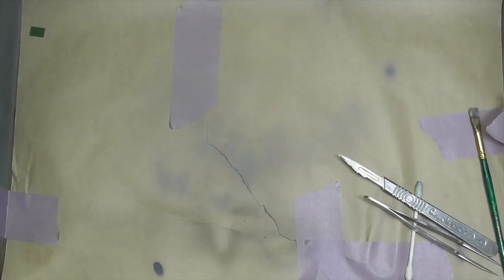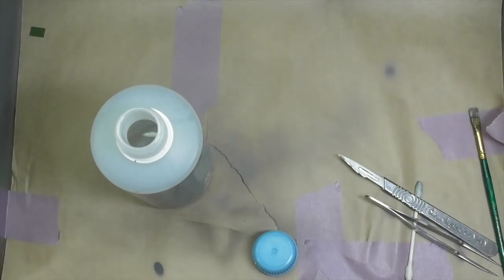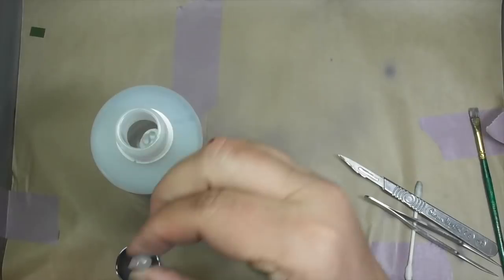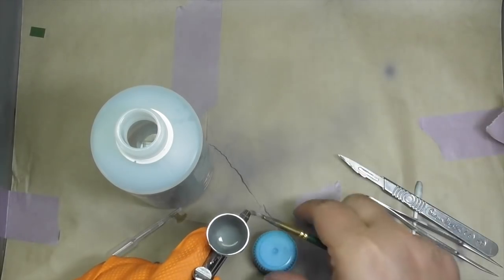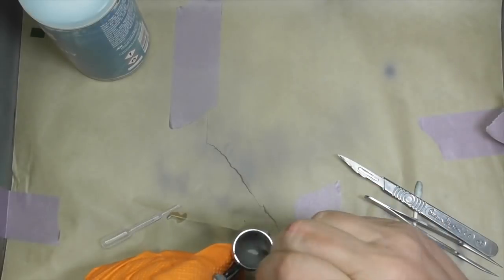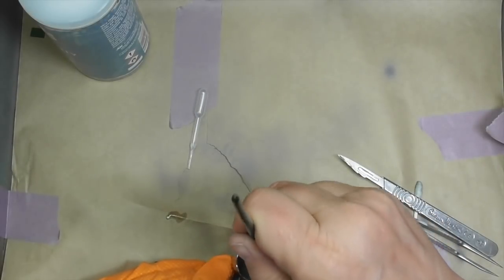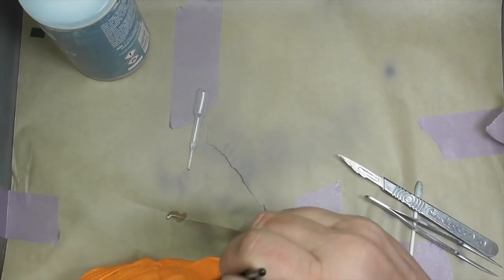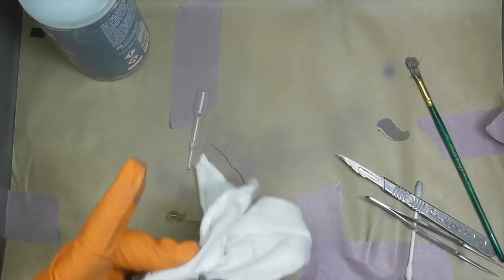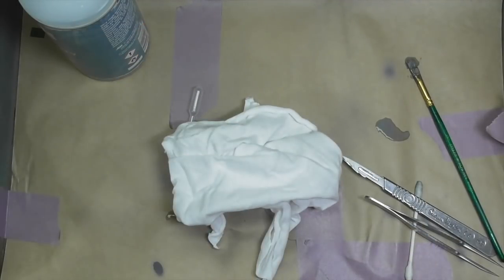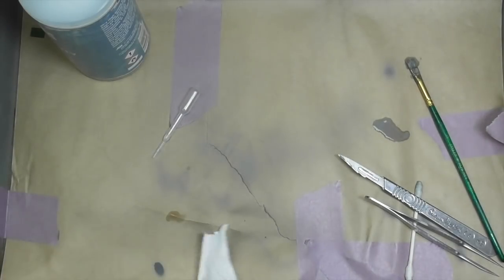Put this out of the way. Clean the airbrush. I'm going to use the AK Real Color thinners for cleaning as well. It's not going to take a lot. I've got my brush, clean all around in there. Backflow.